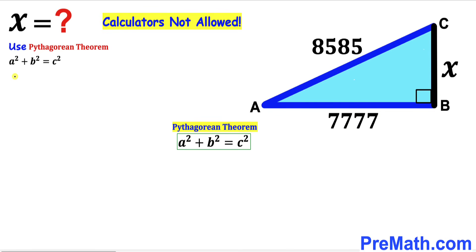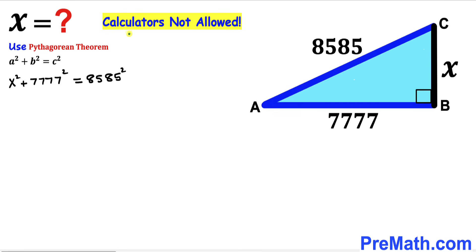Let's fill in the blanks in the Pythagorean formula: X² + 7777² = 8585². Just bear in mind that we are not supposed to be using calculators of any kind, so we have to be very careful when dealing with these big numbers.